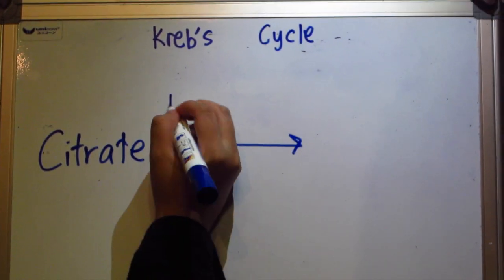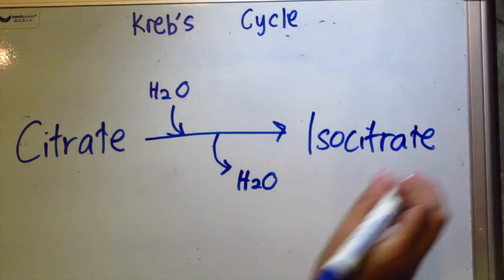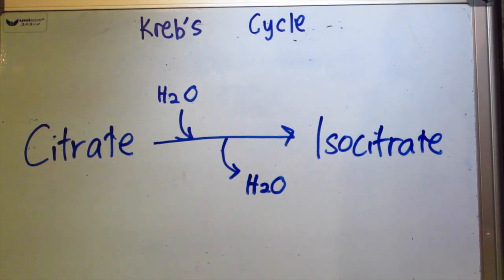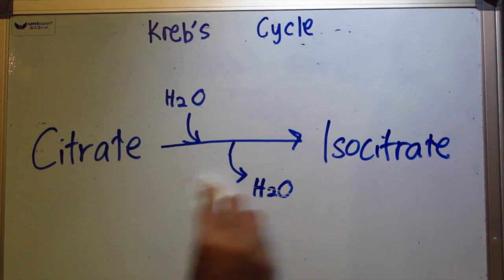Step 2, isomerization. The atoms of citrate are rearranged by the removal and addition of a water molecule. Isocitrate, the isomer of citrate, is formed.